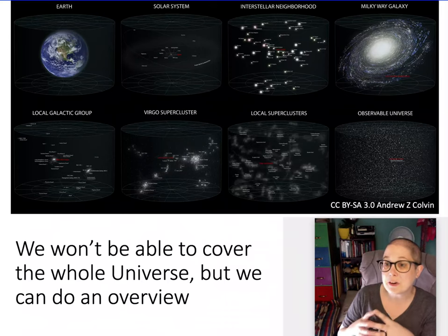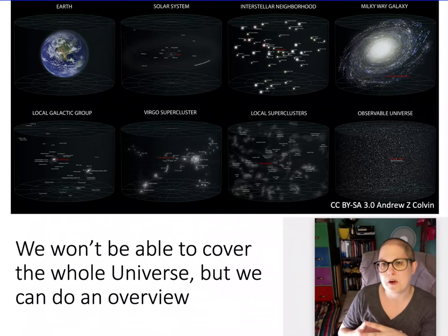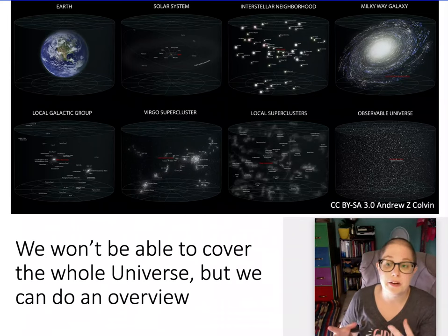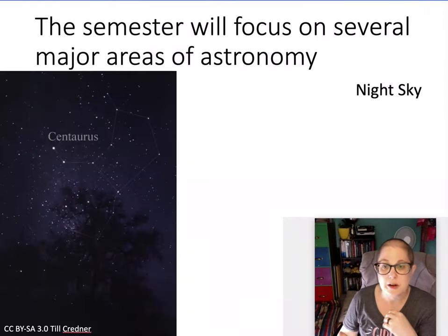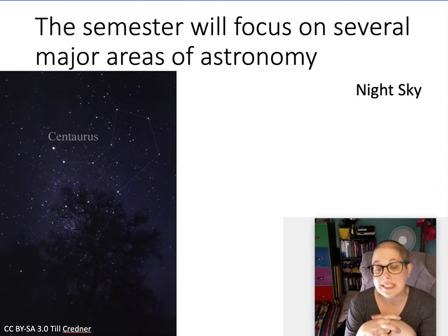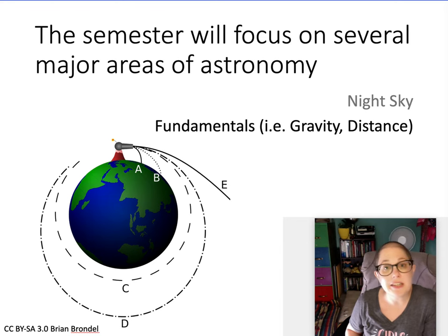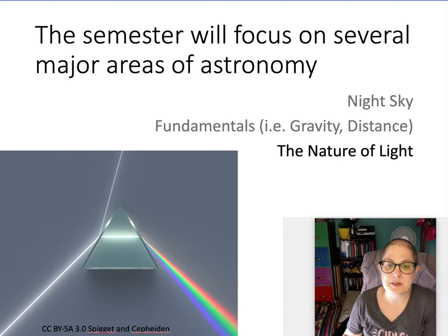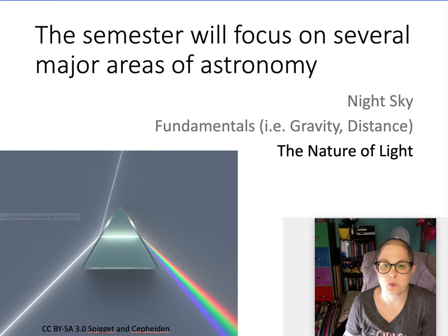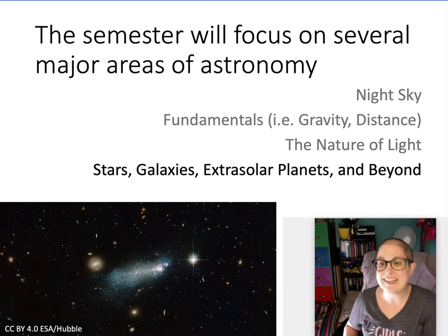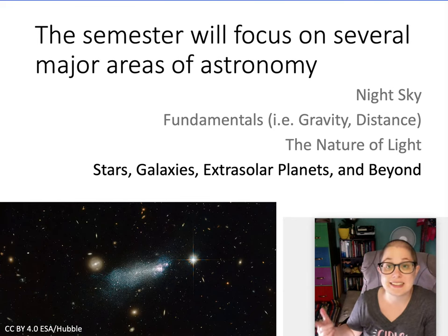We're going to start at Earth — from what we can see from Earth — talk a little bit about the solar system, spending quite a bit of time on stars: what we know about stars, how we know that, and bigger out into galaxies. Then we'll talk about the beginning of everything, the universe. We'll start with the night sky, talk about some physics fundamentals like gravity, astronomy fundamentals like how we measure distances, and quite a bit on the nature of light — what light is, what it means, and how we use it to learn almost everything we know in astronomy. Finally, we'll use all those tools to look at stars, galaxies, extra-solar planets, and the universe beyond.